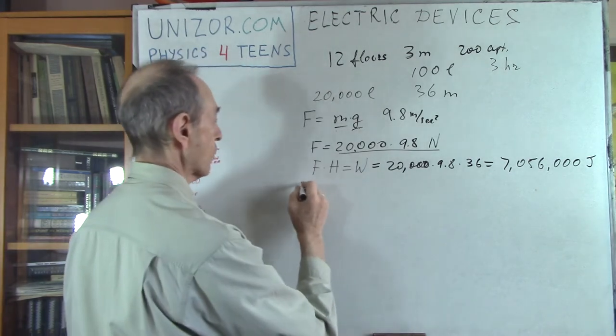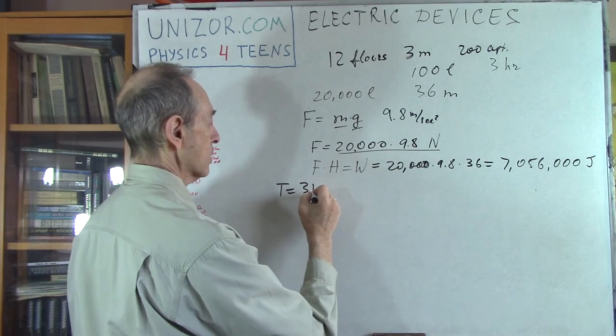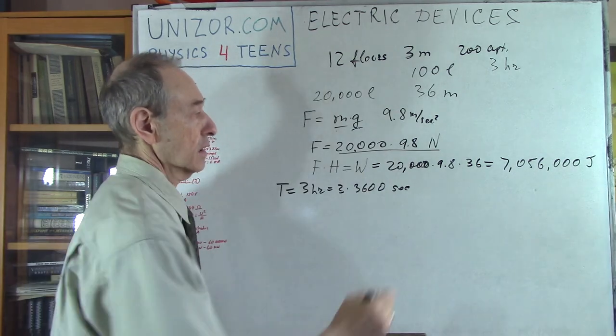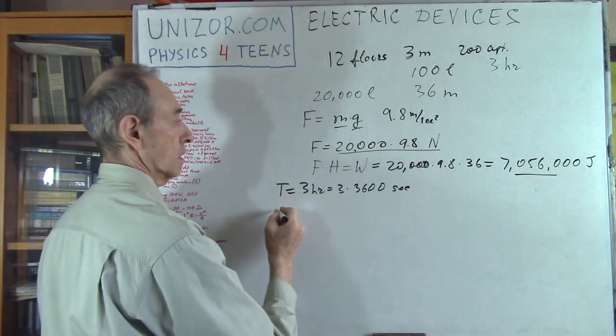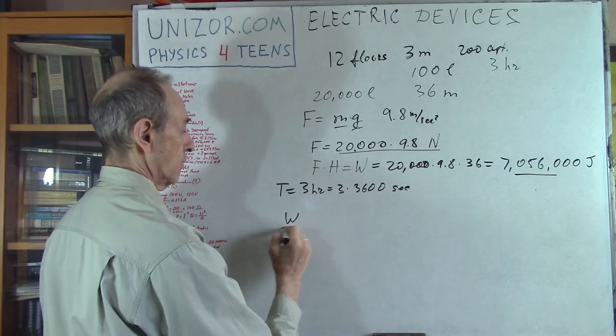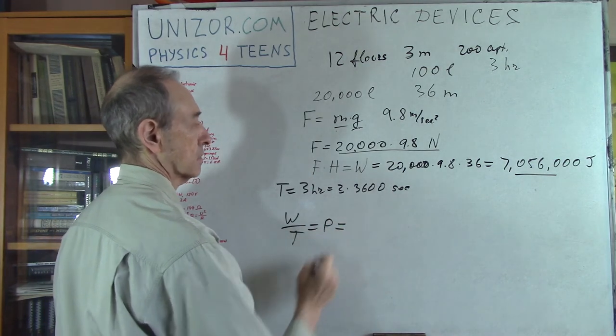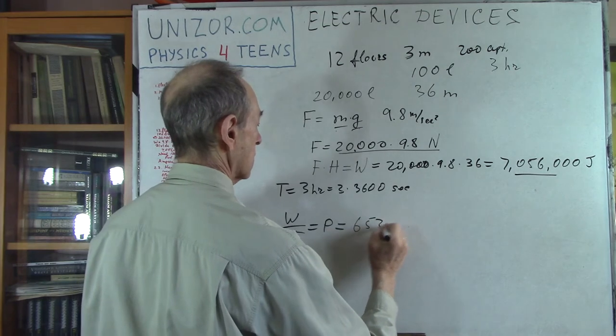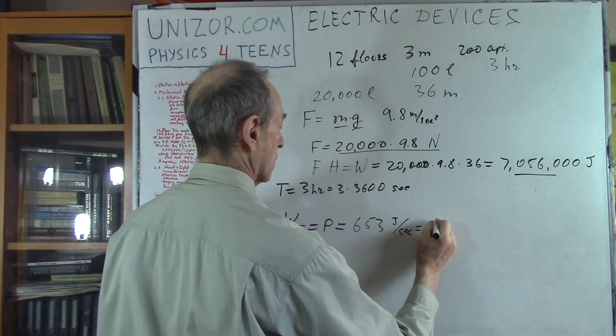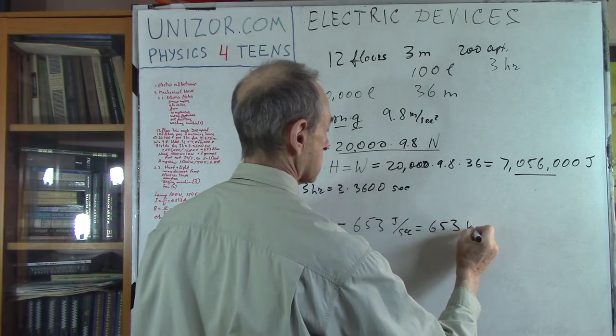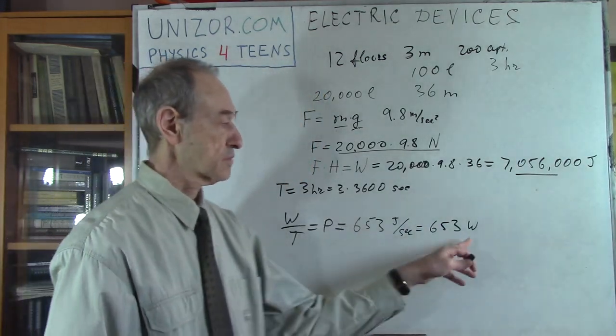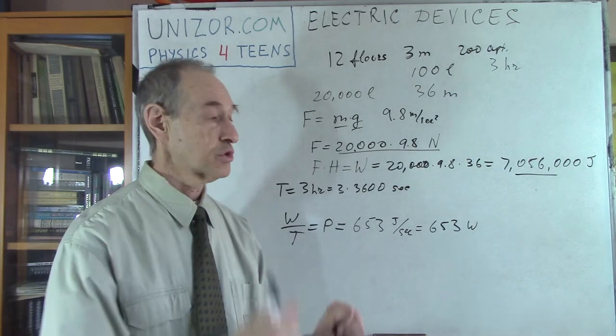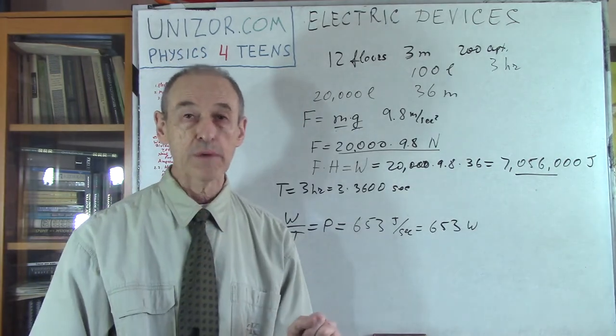Now this amount of work is performed by time is equal to 3 hours, which is 3 times 3600 seconds. If I divide my joules work divided by time, that would be my power. So I have to divide 7,056,000 by this. And the result is 653 joules per second, which is 653 watts. So this is the power which is necessary to pump the water up to the roof.